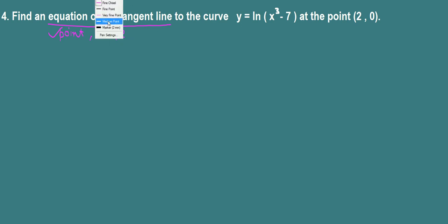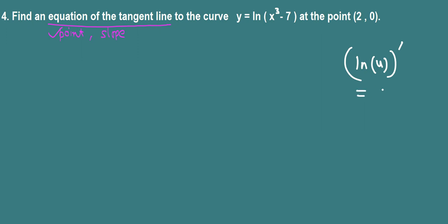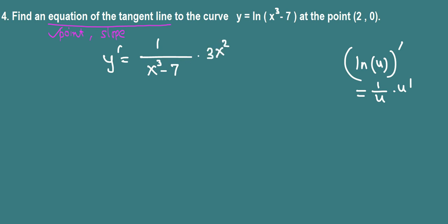So let's work on the slope — find the derivative. For the natural log of some inner function, when we take the derivative, it's the derivative of the outer function, 1 over u, times the derivative of the inner function. So y prime is 1 over (x cubed minus 7) times the derivative of the inner function. The derivative of x cubed is 3x squared, and the derivative of 7 is 0.